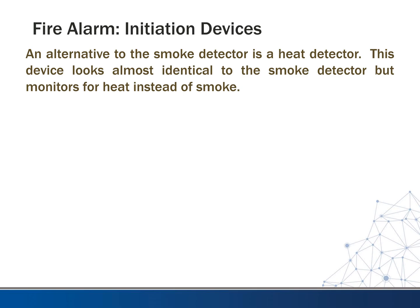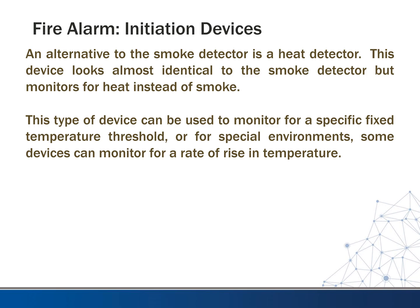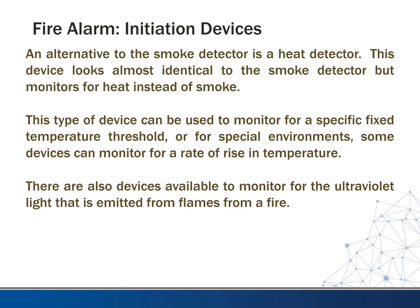An alternate to a smoke detector is a heat detector, which looks almost identical but monitors for heat instead of smoke. This device can monitor for specific fixed temperature thresholds, or for a rate of rise in temperature — for example, if the temperature goes up 20 degrees within five minutes, there's probably a problem. Heat detectors are used in kitchens where cooking produces smoke, and in closets or maintenance rooms where dirt could cause false alarms on a smoke detector.